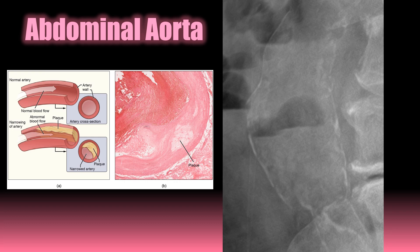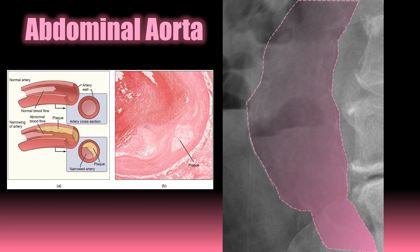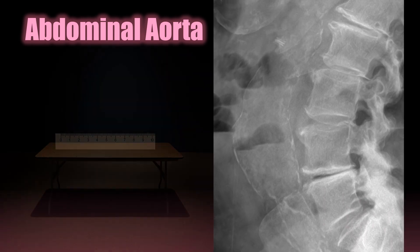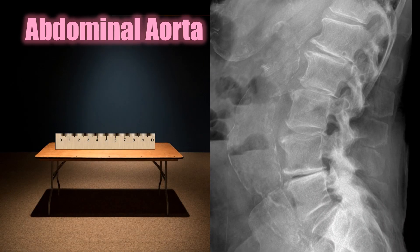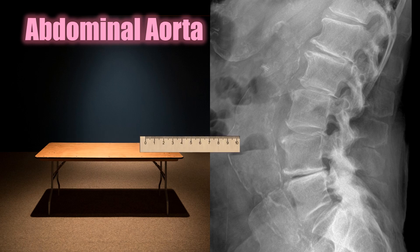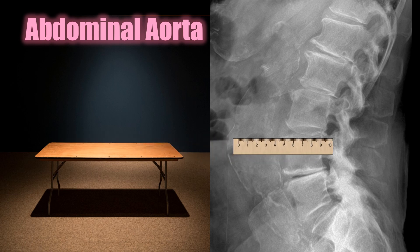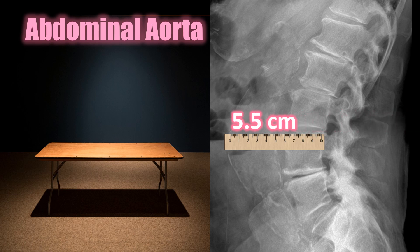Let's first look at the boundaries of the abdominal aorta, which are emphasized on this x-ray due to the presence of conduit wall calcification or atherosclerotic plaquing. Next, let's find and measure the widest visible portion of the abdominal aorta — in this case it looks like we get about 5.5 cm.